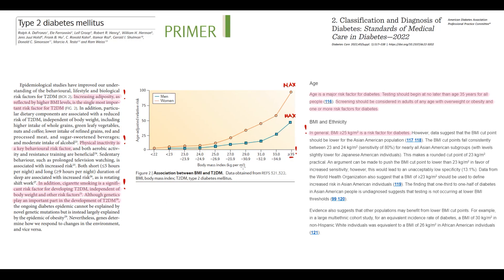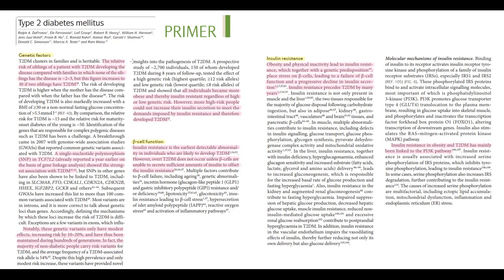Importantly, the risk of type 2 diabetes increases with age, so screening for type 2 diabetes should begin no later than age 35 for all people. There are three factors in the pathogenesis of type 2 diabetes.